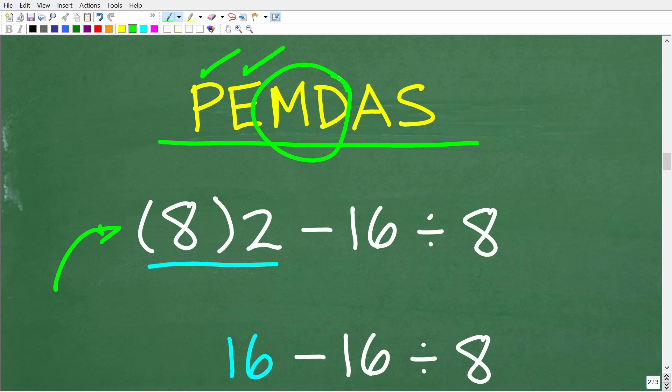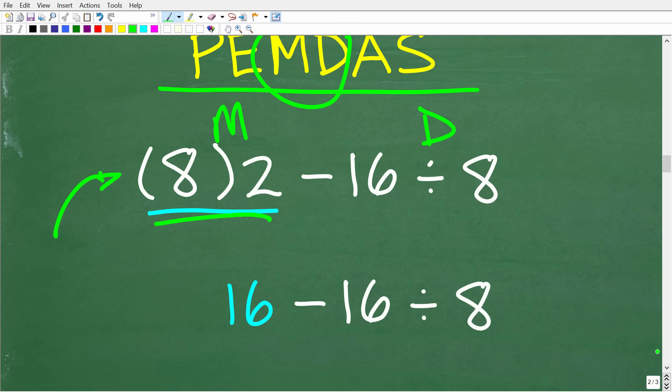Do we have any multiplication or division in this problem? Well, right here, this two next to this eight, this means multiplication. And then of course, we have a division operator over here. So what do we see first from left to right? Well, we see the multiplication first. So that's what we're going to do next. So eight times two, of course, is 16. So at this point, we have 16 minus 16 divided by eight.